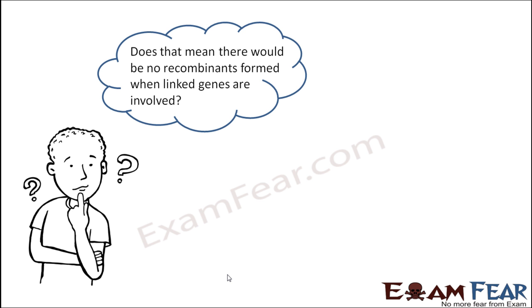Does that mean there would be no recombinants formed when linked genes are involved? Whenever you have linked genes, they will only carry the same traits to the next generation in the same way. But still, when Morgan performed the dihybrid cross experiment, we saw that there was about 1% of recombinants. So from where does that recombinant come into picture?